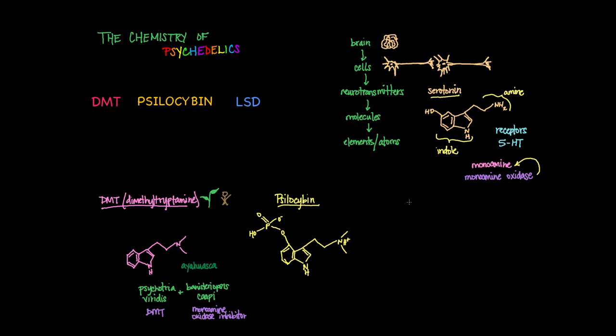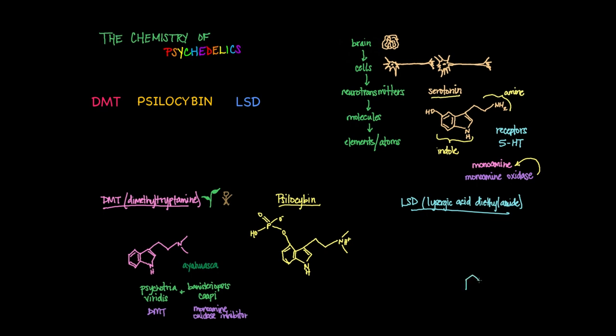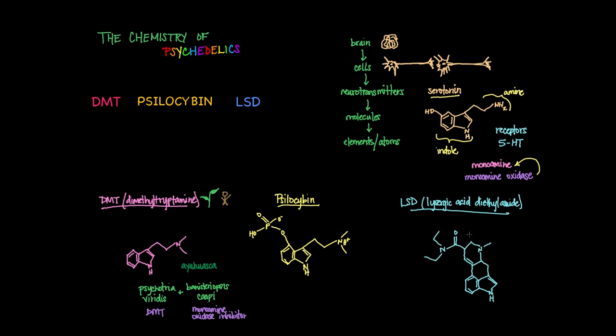Once absorbed, psilocybin quickly gets metabolized to psilocin. Finally, we have LSD or lysergic acid diethylamide, which was discovered by Albert Hofmann, a Swiss chemist who was studying compounds found in ergot, a type of fungus found in rye. Although the molecular structure is more elaborate, its base structure is also an indole, ultimately derived from a naturally occurring fungus similar to psilocybin.